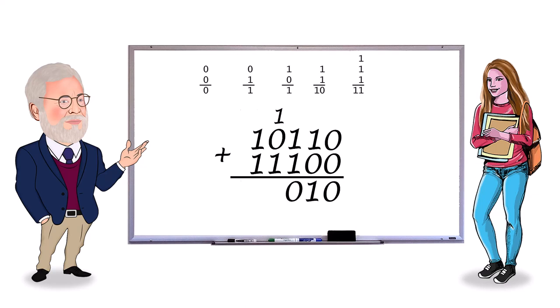One plus one is zero with one to carry. We have another one plus one because of the previous carry. That's a zero with one to carry. Finally, one plus one plus one is one with one to carry, and we bring that carry down because the next column is empty.